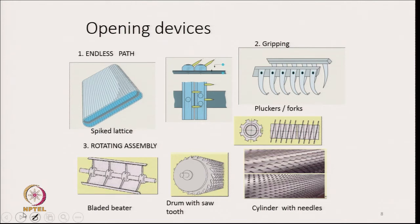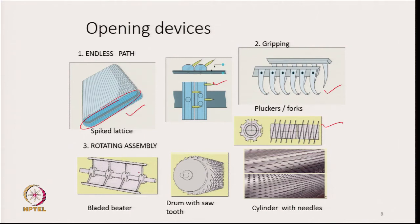These are some of the opening devices used in blow room machines. The spike lattice is basically a kind of conveyor with spikes on its surface. There is also a device called a gripper, which is spring loaded. Then there is a rotating assembly called a bladed beater — a drum with short blades on its surface — and a cylinder with needles on it. These are the types of opening devices used for opening tufts without damaging them.